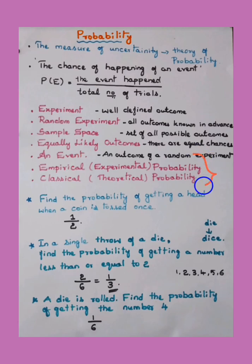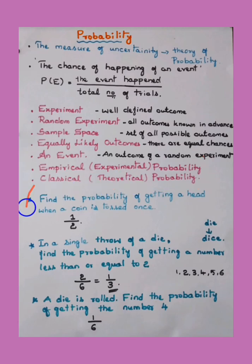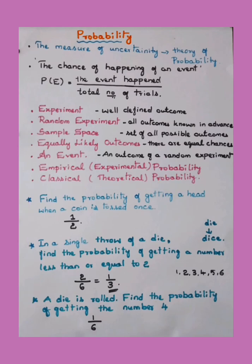There are two types of probability: empirical or experimental probability, and classical or theoretical probability. All the probability we learn in text form is an example of theoretical or classical probability. If you are performing the action experimentally — say tossing a coin twice and counting how many times you get a head — then it is empirically performed and is called empirical probability.